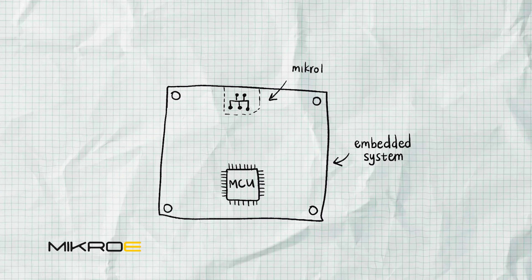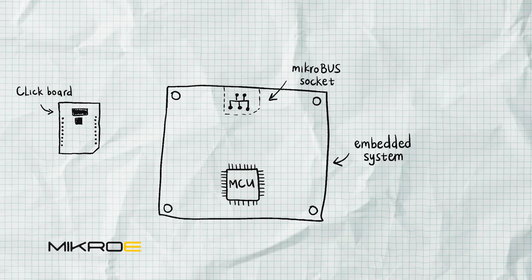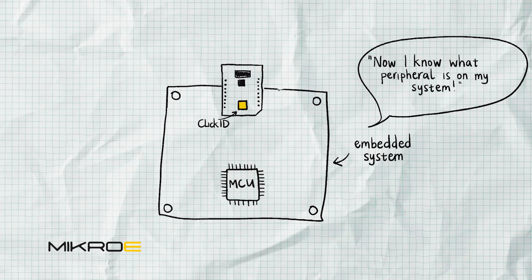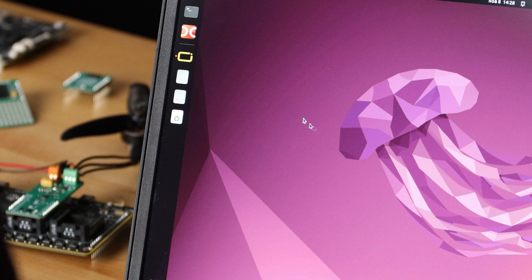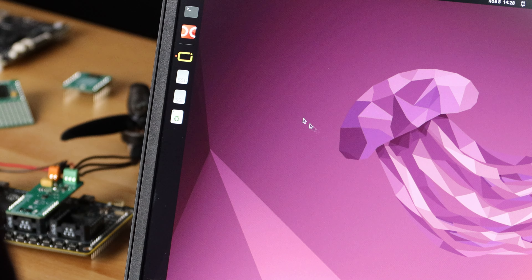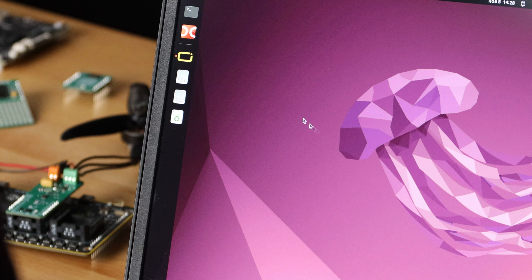You can capture the ID of a click board in an OS-based environment like Linux, as well as a bare metal environment via Nectar Studio IDE. Imagine you have an embedded system — microbus could be your friend for inserting sensors into your embedded design. After embedding the microbus standard into your design, you'll be able to insert your desired peripheral. With Click ID as a hardware solution, your embedded project can always be aware of what is on your embedded board at every instance in time.